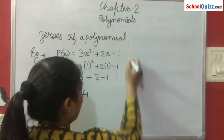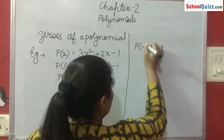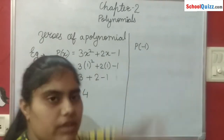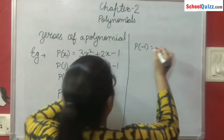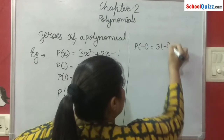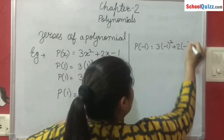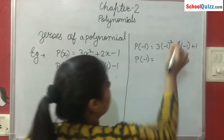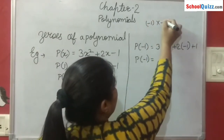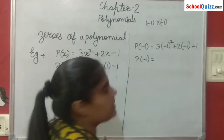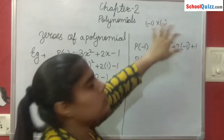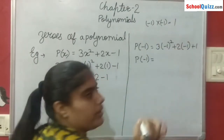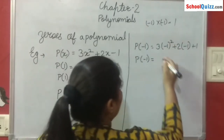Similarly, now we are going to put the value of x equals to minus 1. ہم x کو minus 1 سے replace کر رہے ہیں. So 3x square means 3 of minus 1 square, plus 2 into minus 1, and then minus 1. Minus 1 کا square — minus 1 into minus 1 ہوگا. Minus multiplied by minus becomes plus. So 1 times 1 gives us 1. So 3 times 1 we get 3.